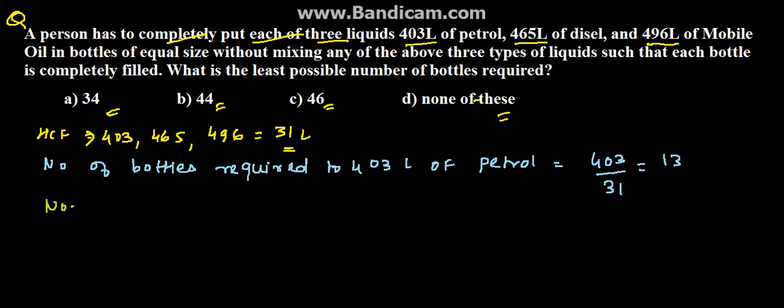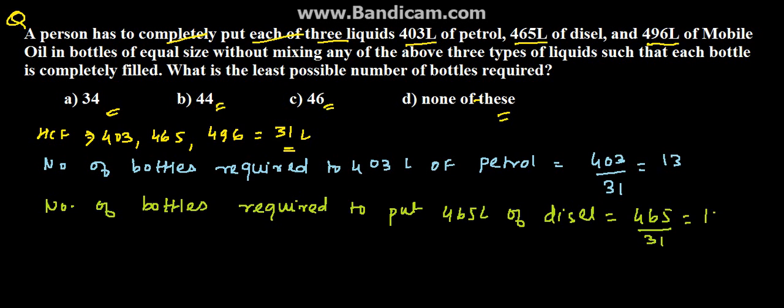Similarly, the number of bottles required to put 465 liters of diesel is equal to 465 upon 31, which comes to 15.